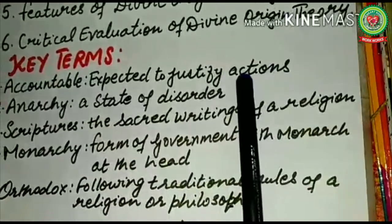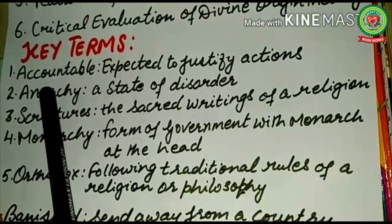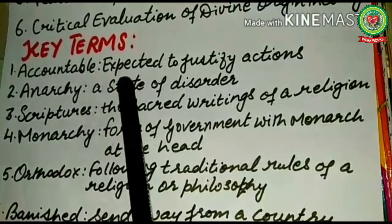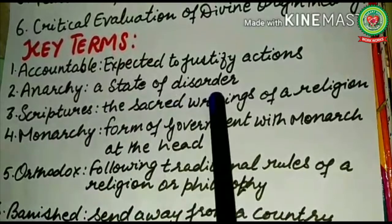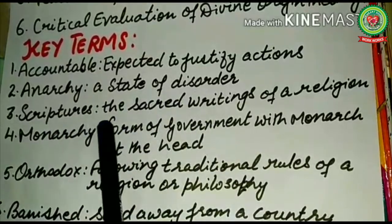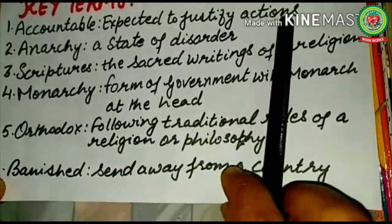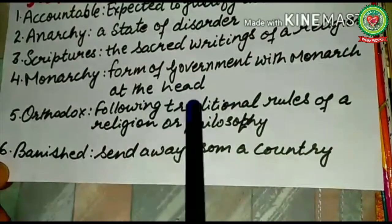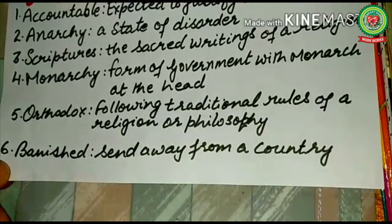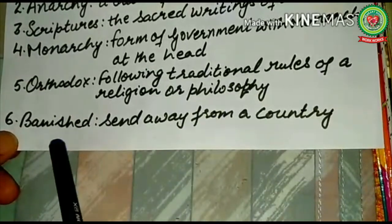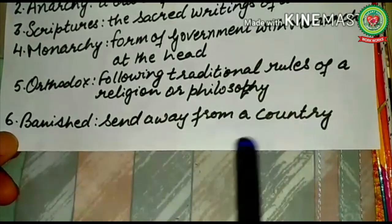Before discussion of these objectives, I will discuss the key terms. The first term is 'accountable,' which means expected to justify actions. 'Anarchy' means a state of disorder. 'Scriptures' are the sacred writings of religion. 'Monarchy' is a form of government with a monarch at the head. 'Orthodox' means following traditional rules of religion or philosophy. 'Banished' means sent away from a country.